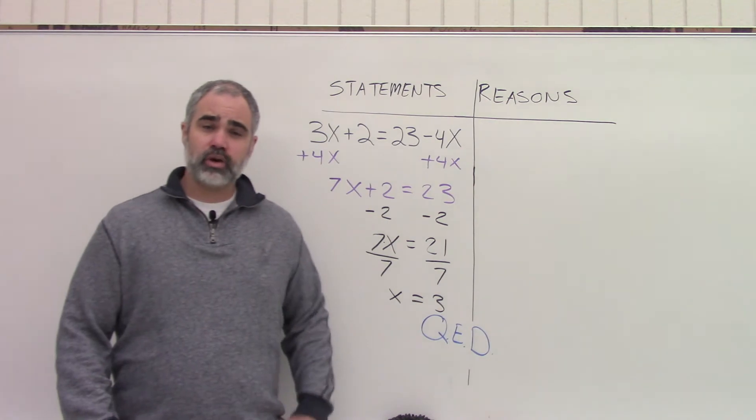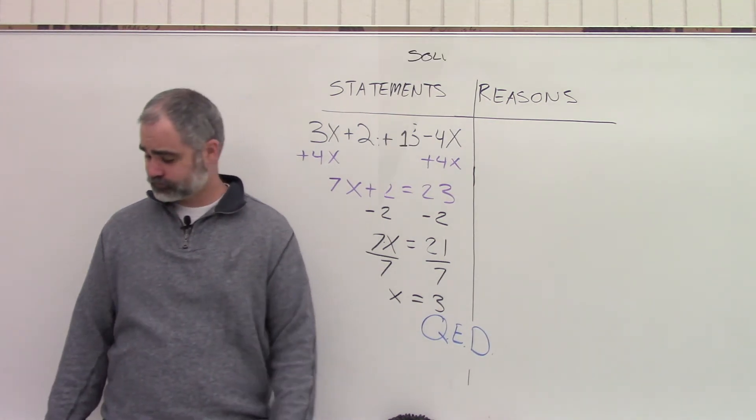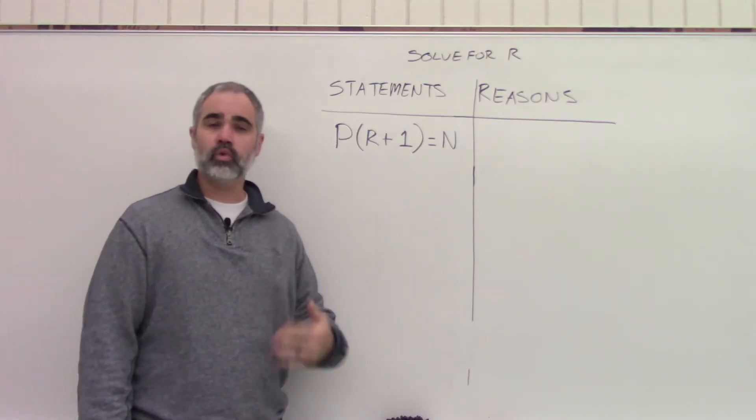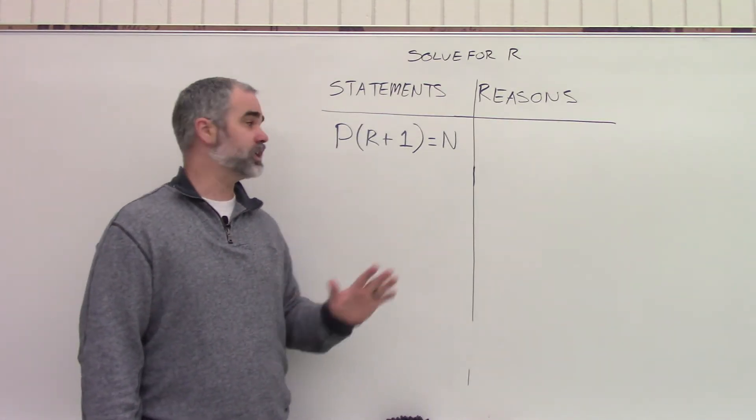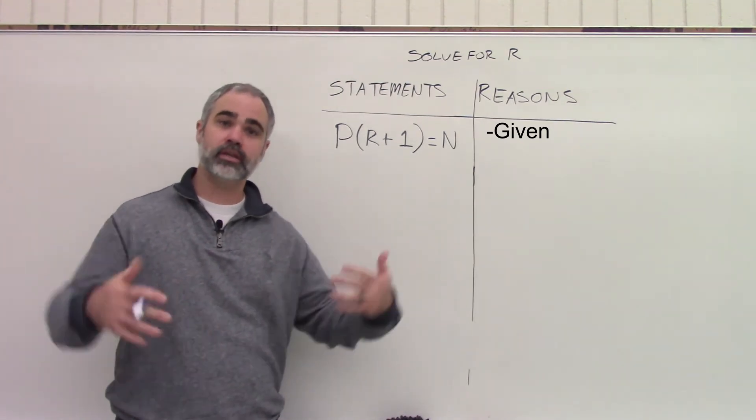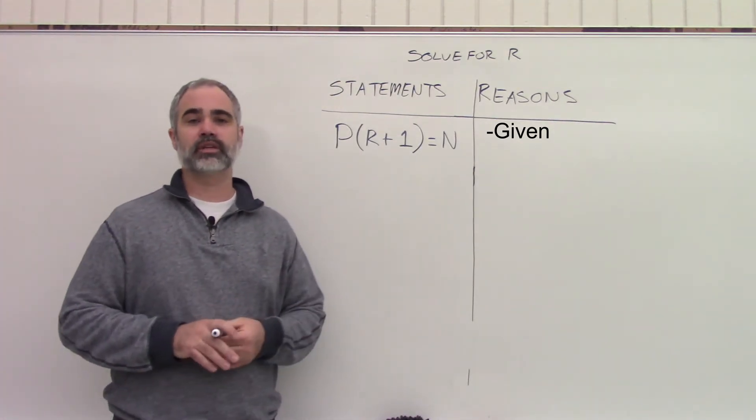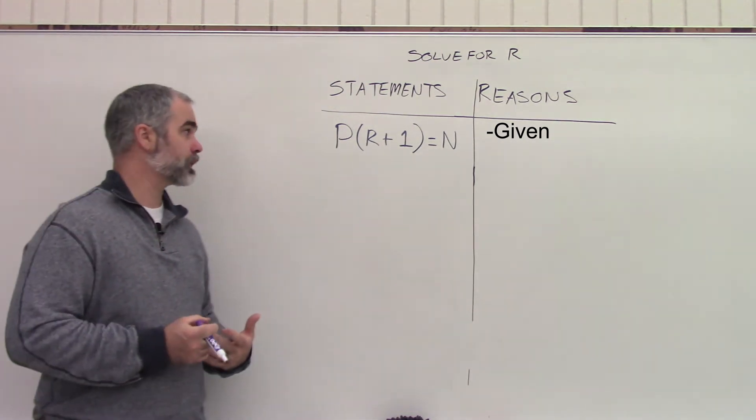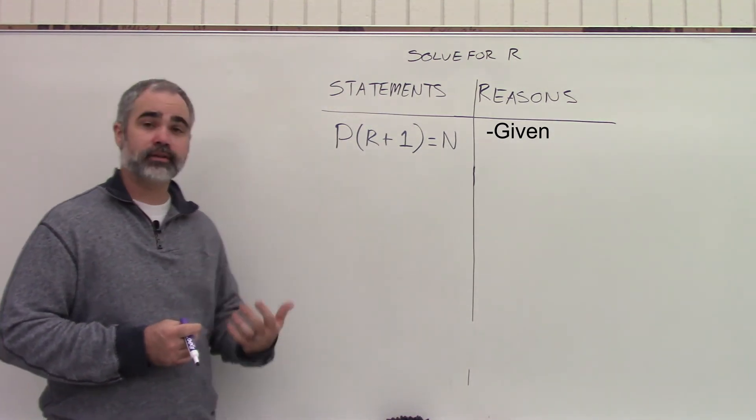And we're going to go ahead and try another example here. We have this problem written here. I need a reason for it. The only reason that you need is the word given. We always start our proofs with the word given because it's the problem that was given to us. It's not something you have to prove because you can already assume that it's true.